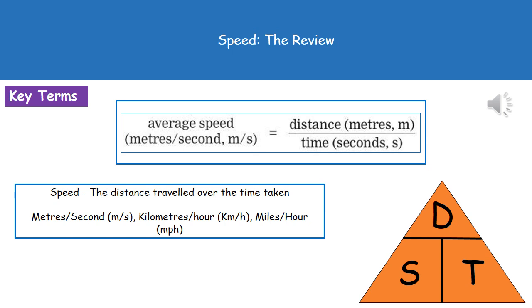If we were asked to work out the distance, you'd cover up the distance and then the calculation is speed times time. If we needed to work out the time, cover up time and it would be distance divided by speed, and so on.